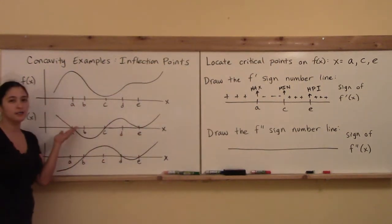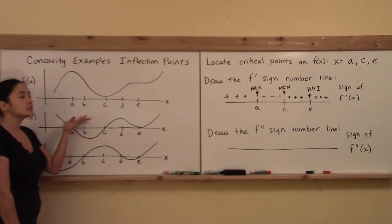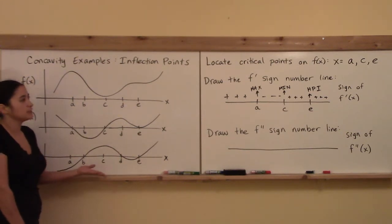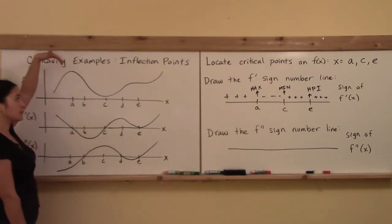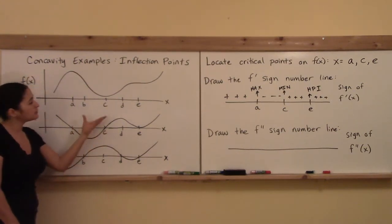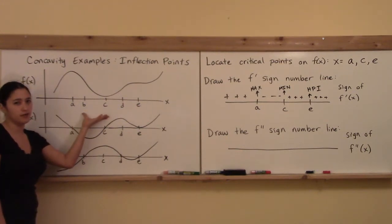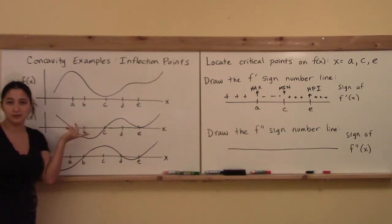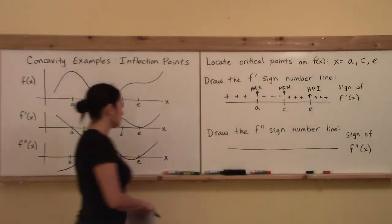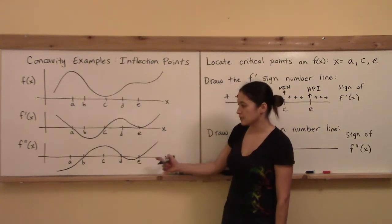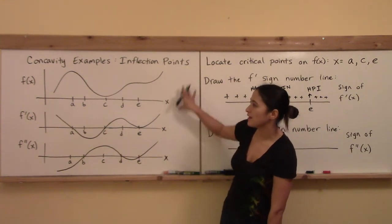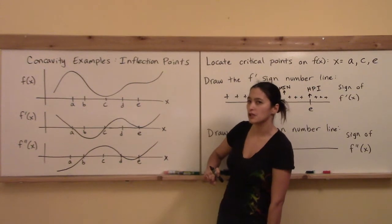We've talked about where the function is increasing and decreasing. Now let's talk about where the function is concave up and concave down. From the last video: concave down is like an umbrella — if rain comes down on you, you're underneath it. Concave up is like a cup — if rain comes down, it collects in a pool. The second derivative greater than zero means concave up; second derivative less than zero means concave down.